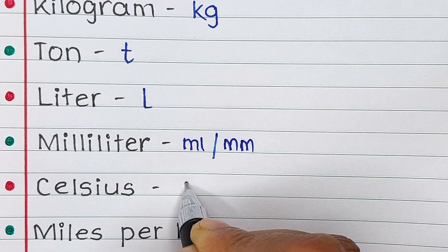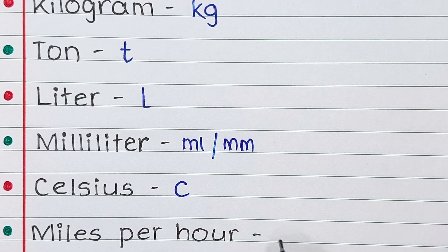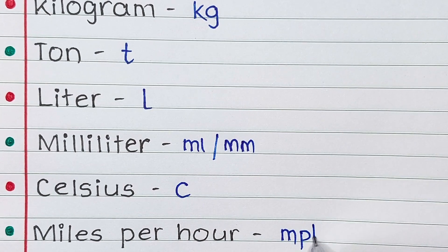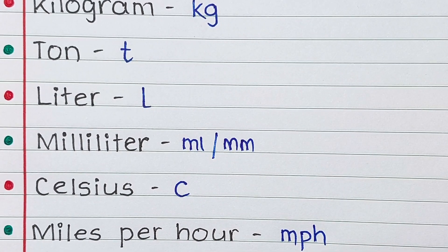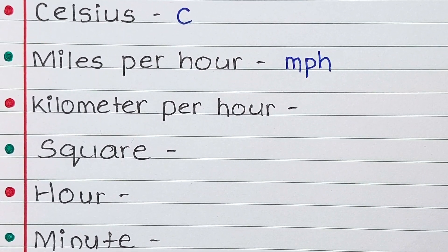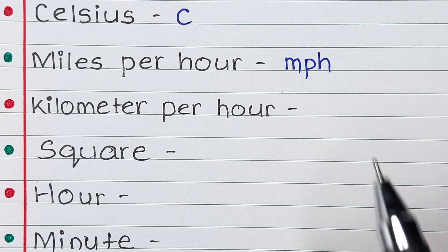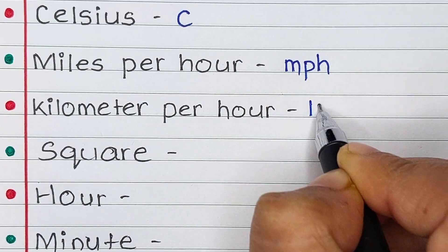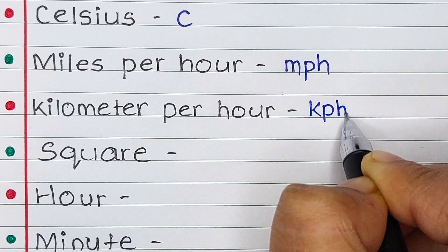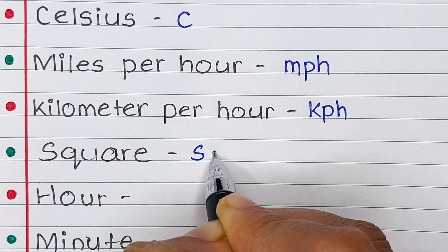Next is Celsius. Celsius is represented as letter c. Next is miles per hour. It is abbreviated as small letter m, small letter p, and small letter h. Next is kilometer per hour. It is written as kph.